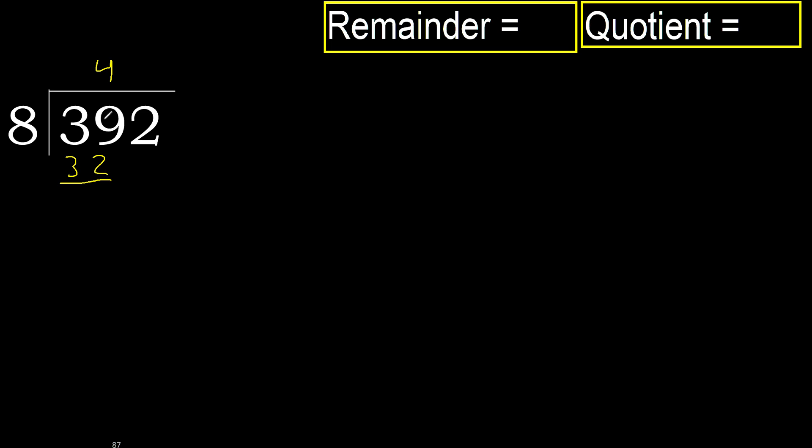Subtract: 39 minus 32 is 7. Next, bring down: 72.